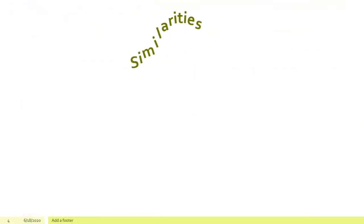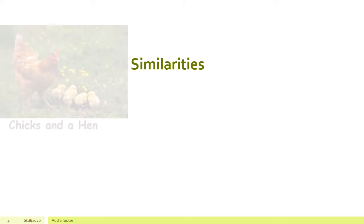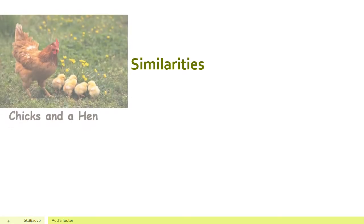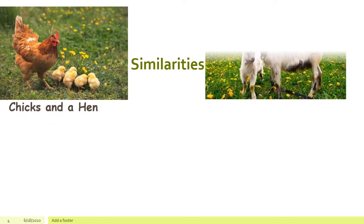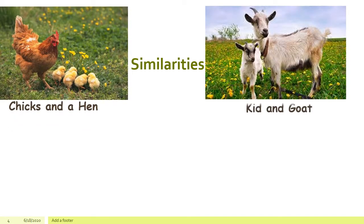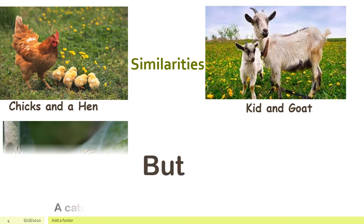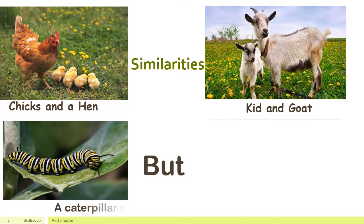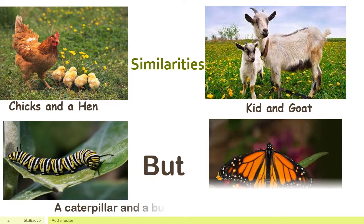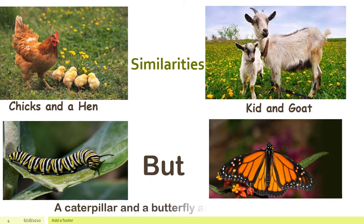In this slide you will notice that the chicks look similar to the hen and the kid looks similar to the mother goat. However, you will notice that a caterpillar looks completely different from the butterfly.